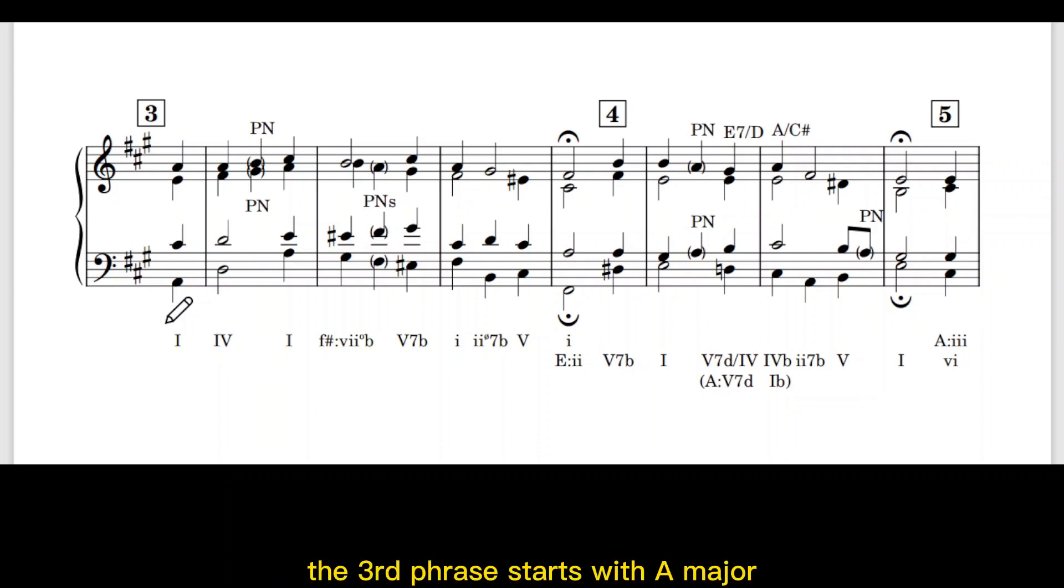The third phrase starts with A major and ends with F sharp minor. Modulation is confirmed by the E sharps and the perfect cadence 5-1. From A major to F sharp minor is abrupt through the chromatic movement E to E sharp in the tenor part. This F sharp minor 1 chord functions as a pivot chord as in E major 2. The D sharp here is the leading note of E major.